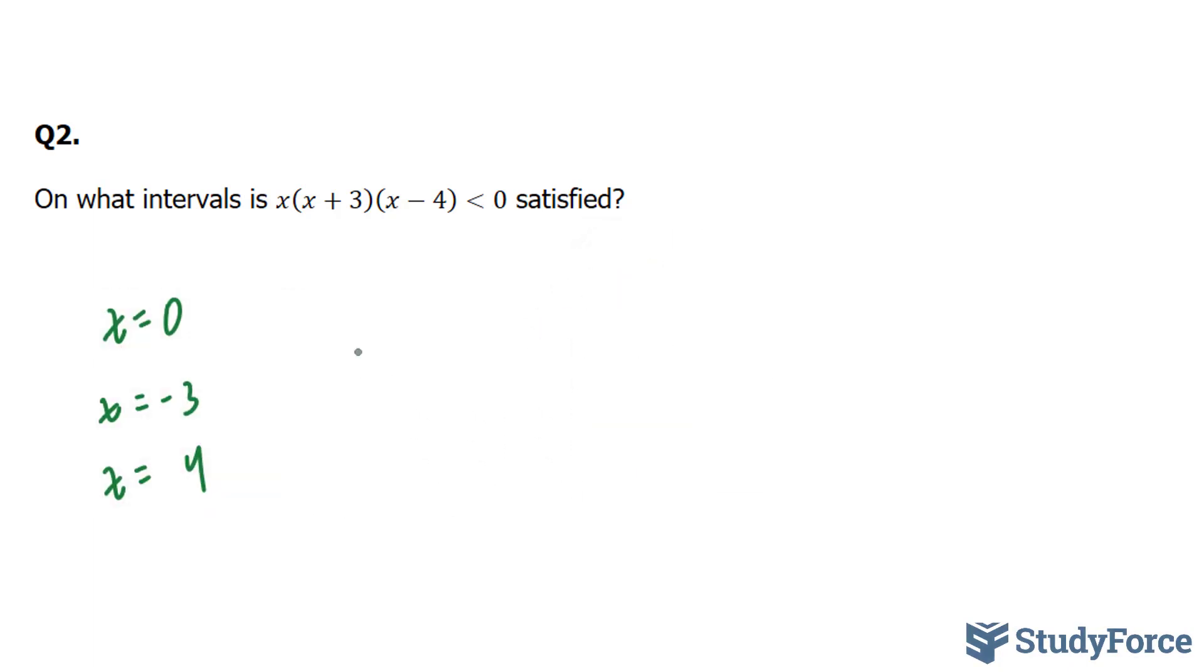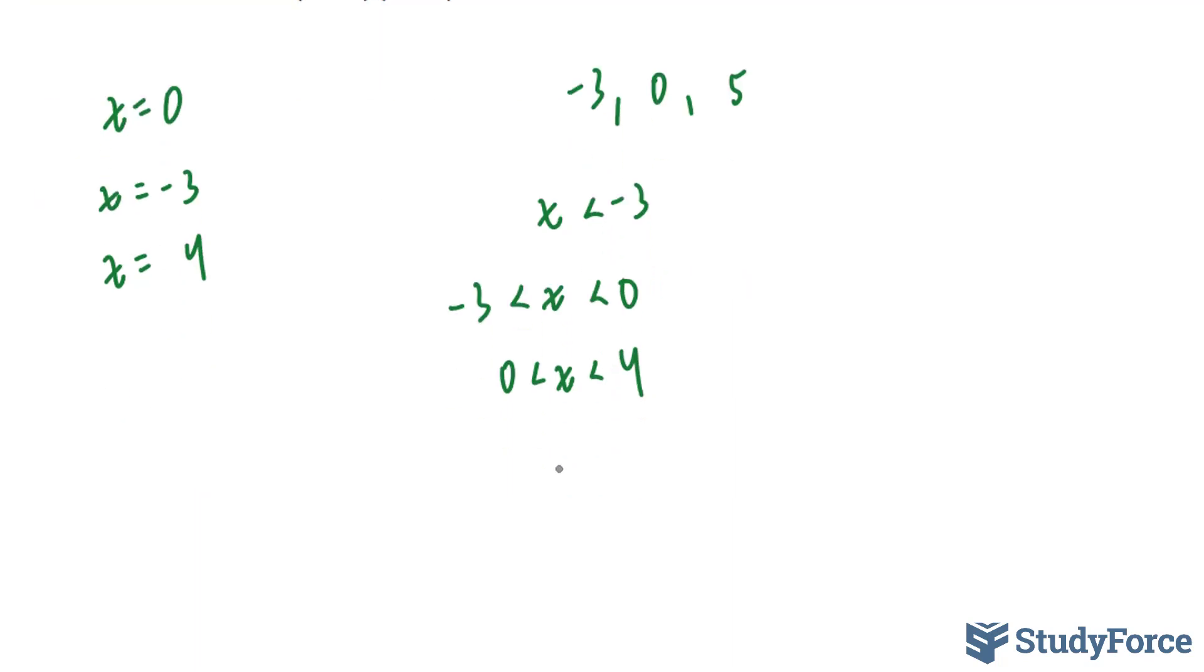Now, our intervals need to be from smallest to largest. So x must be less than -3, x must be between 0 and -3, x between 0 and positive 4, and lastly, x greater than 4. So let's find out what happens when we choose numbers that fit these intervals.